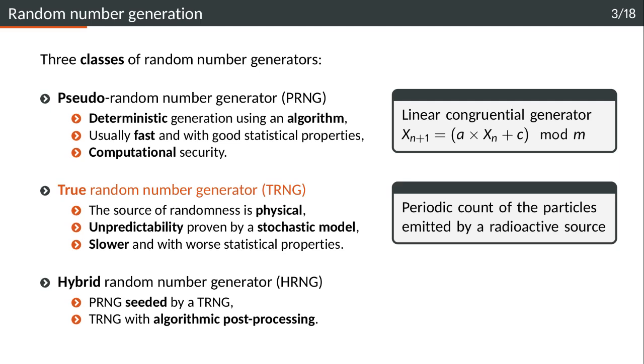When it comes to random number generation, we can identify three classes. The first are pseudo-random number generators. In this case, the generation is deterministic and done by an algorithm. Usually the throughput is quite high and the output stream has good statistical properties. The security is said to be computational, so it's computationally hard to guess the elements of the random sequence. An example is the linear congruential generator.